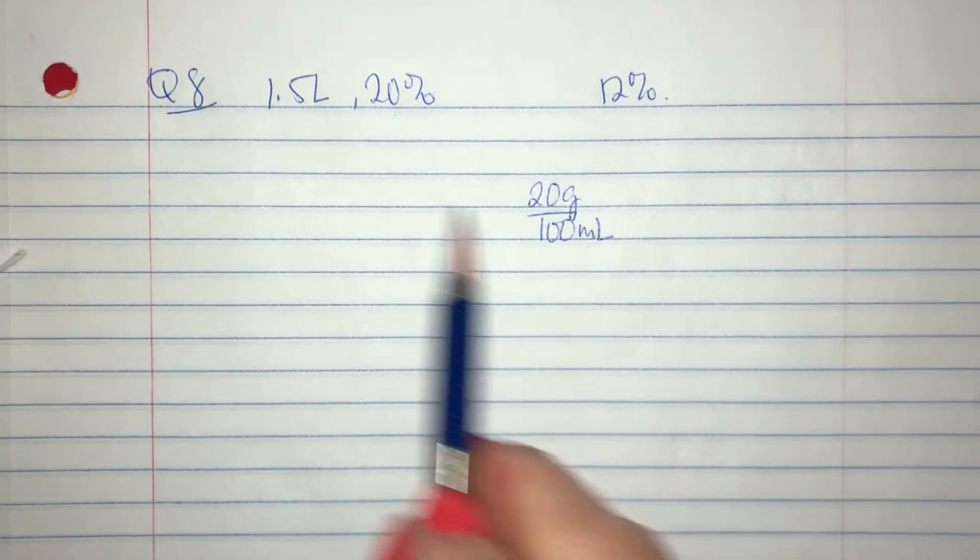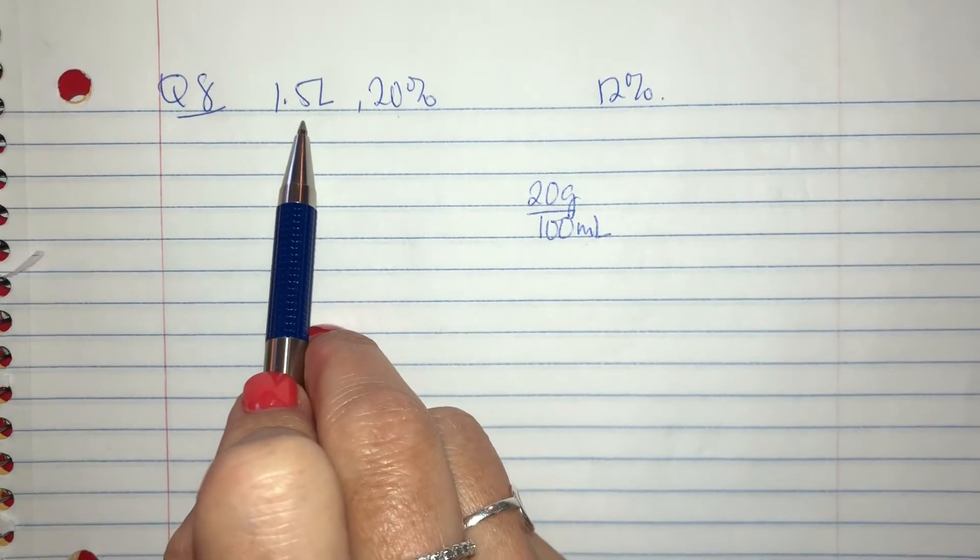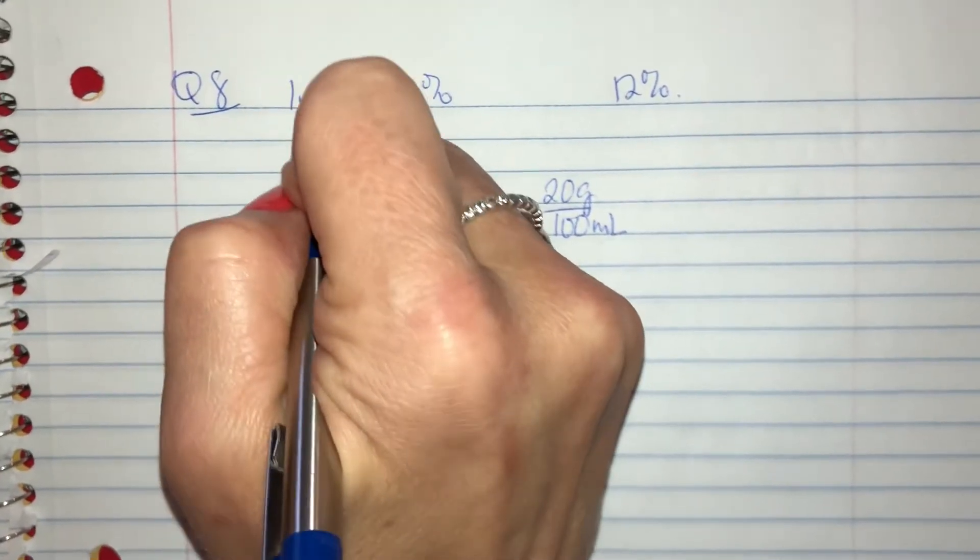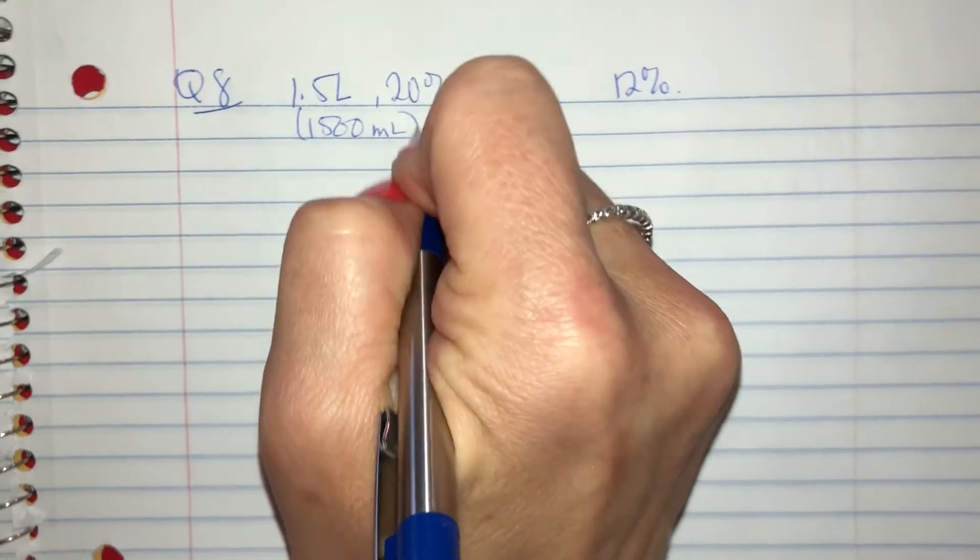Well, because this is in a milliliter fashion, I think that it's best that we convert it because math likes to have the same unit. So this is the same thing as saying 1,500 mils.